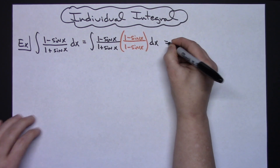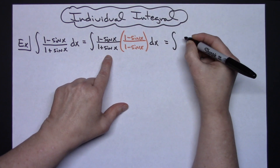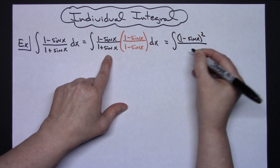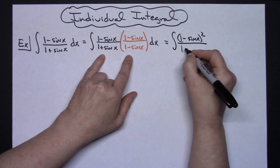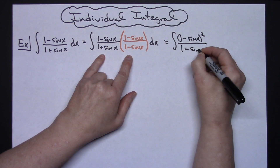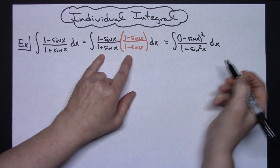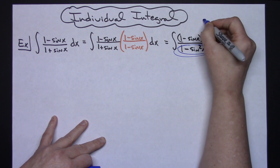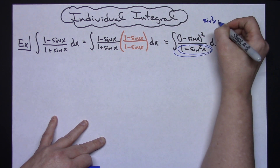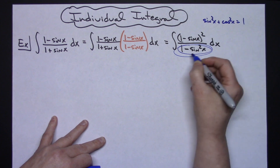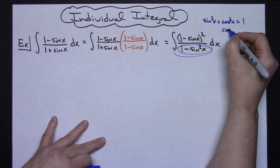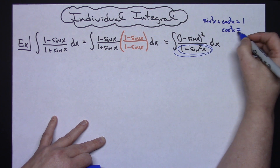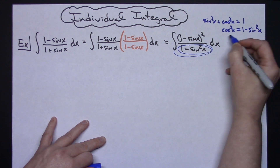Simplifying this out, I'm going to have the integral. On the top I'll leave it as (1 minus sine x) quantity squared. On the bottom, that's the difference of two squares — square the first, subtract, square the second — giving 1 minus sine squared x, dx. Now, recalling that sine squared x plus cosine squared x equals 1, I can solve for cosine squared x by subtracting sine squared x from both sides, giving cosine squared x equals 1 minus sine squared x, which is exactly what I have on the bottom.